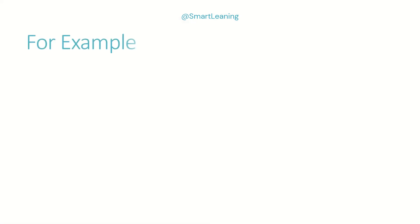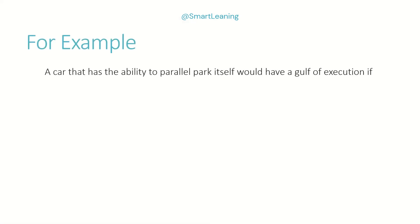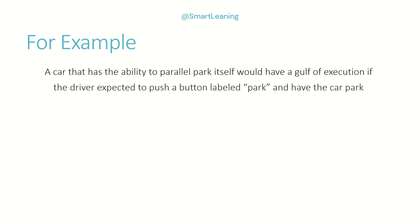For example, a car that has the ability to parallel park itself would have a Gulf of Execution if the driver expected to push a button labeled park and have the car park itself, and the car did not park itself.